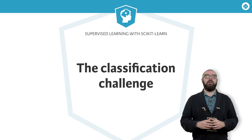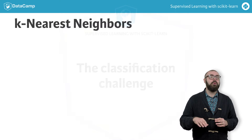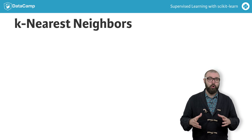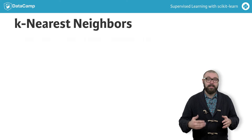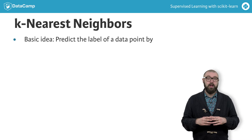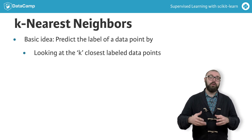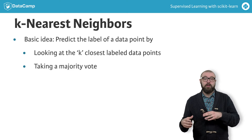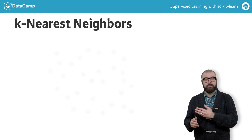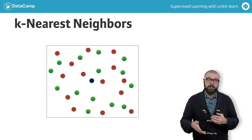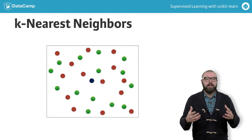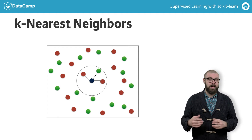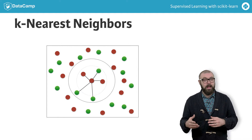Now let's build our first classifier. We'll choose a simple algorithm called k-nearest neighbors. The basic idea of k-nearest neighbors, or KNN, is to predict the label of any data point by looking at the k — for example, three — closest labeled data points and getting them to vote on what label the unlabeled point should have. In this image, there's an example of KNN in two dimensions. How do you classify the data point in the middle? If k equals three, you would classify it as red, and if k equals five, as green.